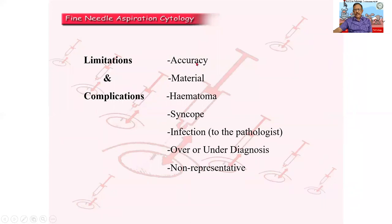There are some limitations and complications. Accuracy — I will have to hit the site, the material has to be obtained, a little bit of technical expertise is needed. Sometimes complications such as hematoma or a blood clot. I should not make the patient stand and do an FNAC — the patient will go into fainting. Better make the patient lie down or at least lean against a support. Infection — not to the patient but to the pathologist. If the patient is HIV positive, there is a good chance the pathologist can be affected by it.